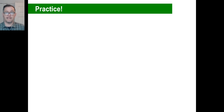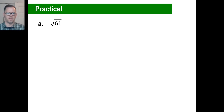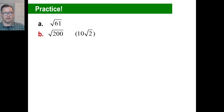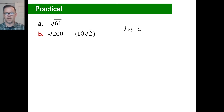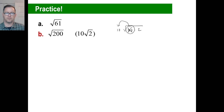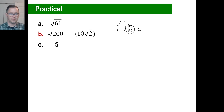Let's do the practice problems. Try A first — pause it. A is the square root of 61, from 25 plus 36. Now pause it and try B. B is the square root of 200 — but don't leave it like that, knock it down. It's 100 times two under the radical, so the square root of 100 comes out as 10, giving you 10 times the square root of two. Pause and try C — C is just five. And D is eight. That completes it.